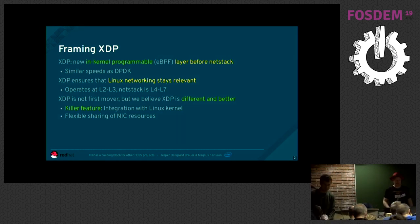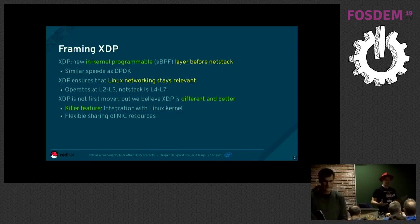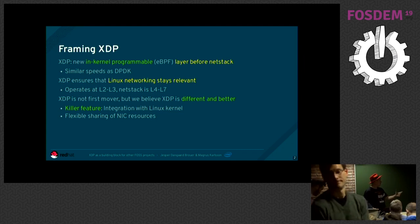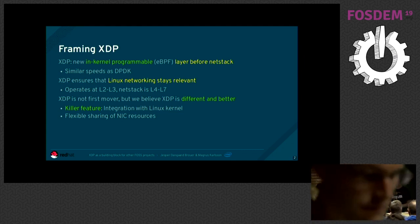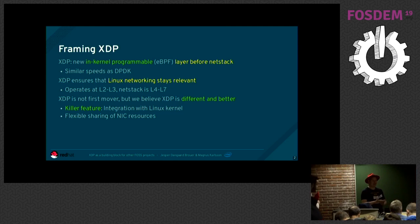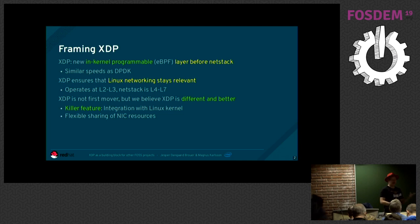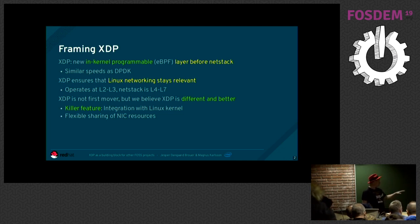What is XDP? It's a new programmable layer in the network stack, sort of before the network stack. We are seeing similar speeds as DPDK, and we have performance comparisons. XDP ensures that the network stack stays relevant — it operates at layer 2 to layer 3, while the network stack operates at layer 4 to 7.